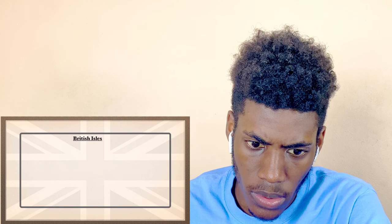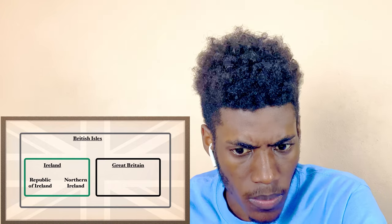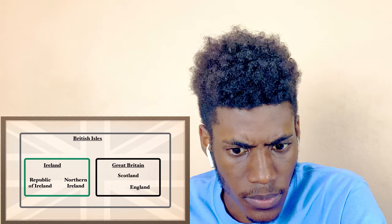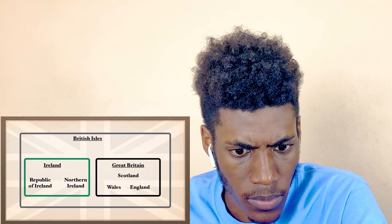To review: the two largest islands in the British Isles are Ireland and Great Britain. Ireland has on it two countries — the Republic of Ireland and Northern Ireland — while Great Britain mostly contains three: England, Scotland, and Wales. These last three, when combined with Northern Ireland, form the United Kingdom.